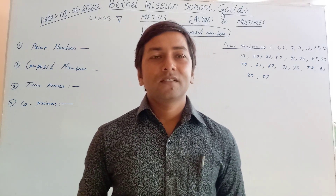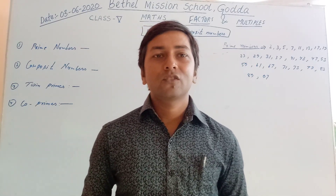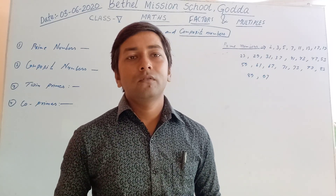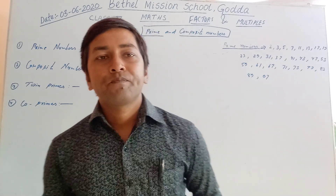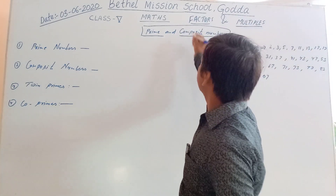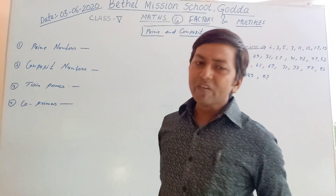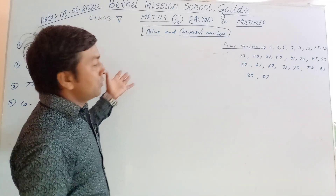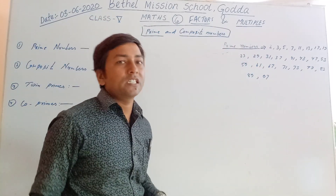Good morning students. I am Magritte. Today I am going to solve Maths of Class 5, Factors and Multiples, Chapter 6. And in this chapter we will know about Prime and Composite Numbers.